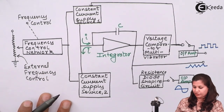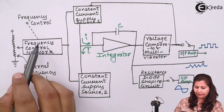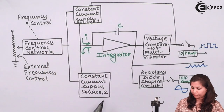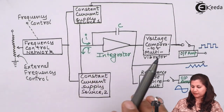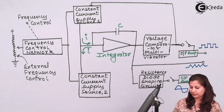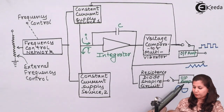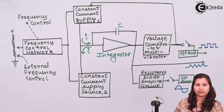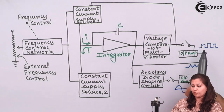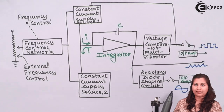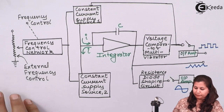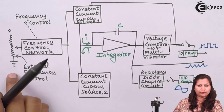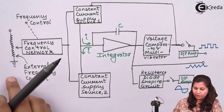This is the block diagram of the function generator. The various components are: a frequency control network, two constant current supply sources (source one and two), an integrator capacitor, a voltage comparator multivibrator, a resistance diode shaping circuit, and two output amplifiers. The function generator gives us three types of waveforms: a square waveform, a triangular waveform, and a sinusoidal waveform.